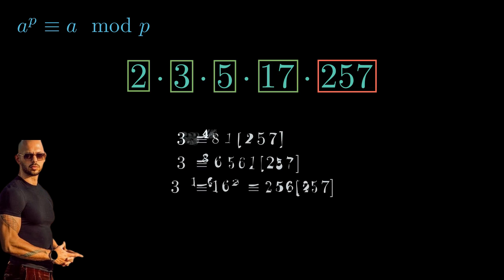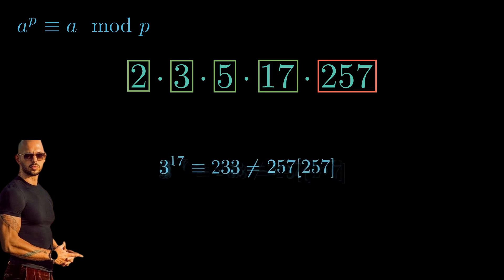So 3 to the 17 doesn't match up with 257. Therefore, 257 doesn't divide n to the 17 minus n because it does not do so for n equals 3.